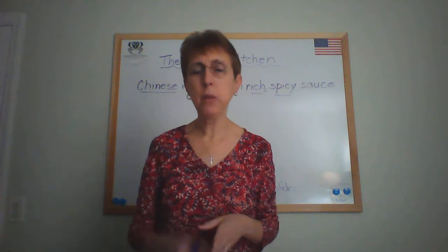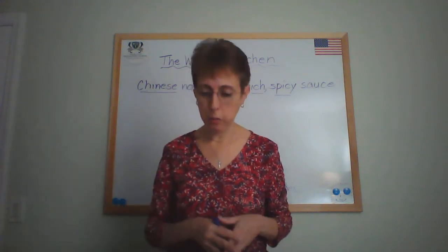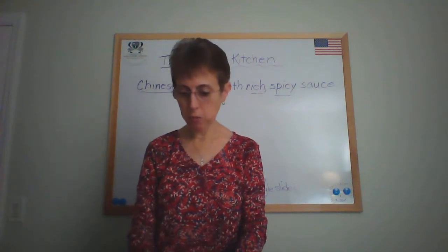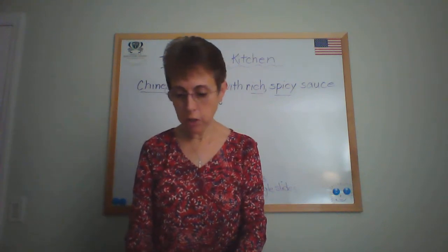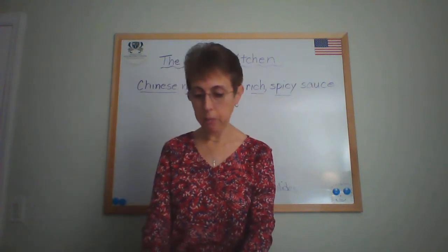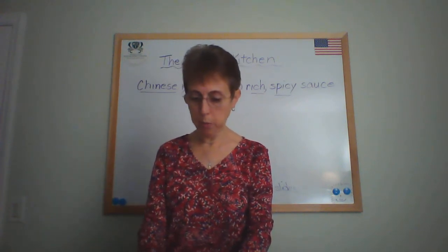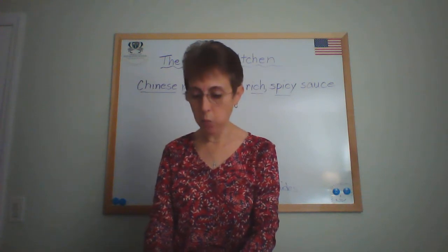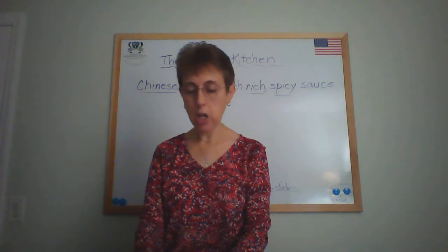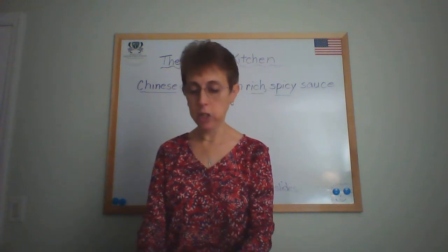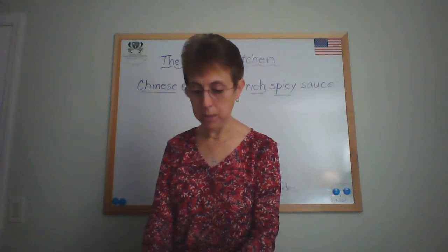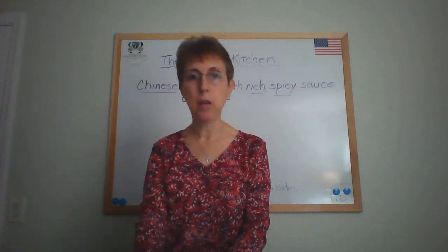I'm going to read what it says here and then we'll take a look at the board. The World's Kitchen: Create a tempting menu for the World's Kitchen, a restaurant that serves food from around the world. List several dishes on the menu using one proper adjective and at least one regular adjective for each. For example, Chinese noodles with rich spicy sauce. Include foods from as many different countries as you can.